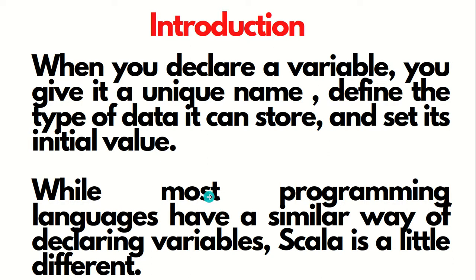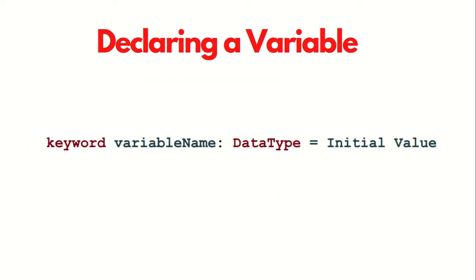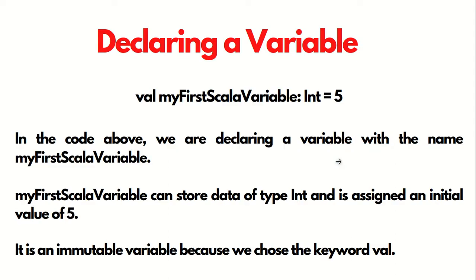But Scala has a different way of declaring variables. Let's see the declaration with the help of the first syntax. The syntax we follow is: keyword, space, variable name, colon, data type, equal to, initial value. For example, we are using VAL as a prefix, then a variable name like 'myFirstScalaVariable', colon, data type is Integer, equal to the initial value.